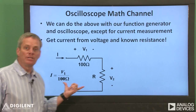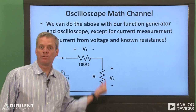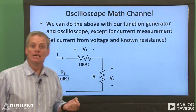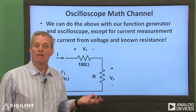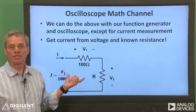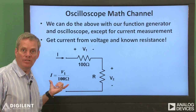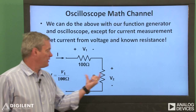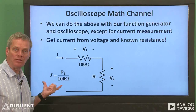As an example, consider this circuit. We put a 100 ohm resistor in series with the resistance we want to characterize. Since the two are in series, the current through the two is the same. If the voltage across the known resistor is V1, we can calculate the current through both resistors as V1 over 100. We can then plot the measured voltage V2 against this calculated current.